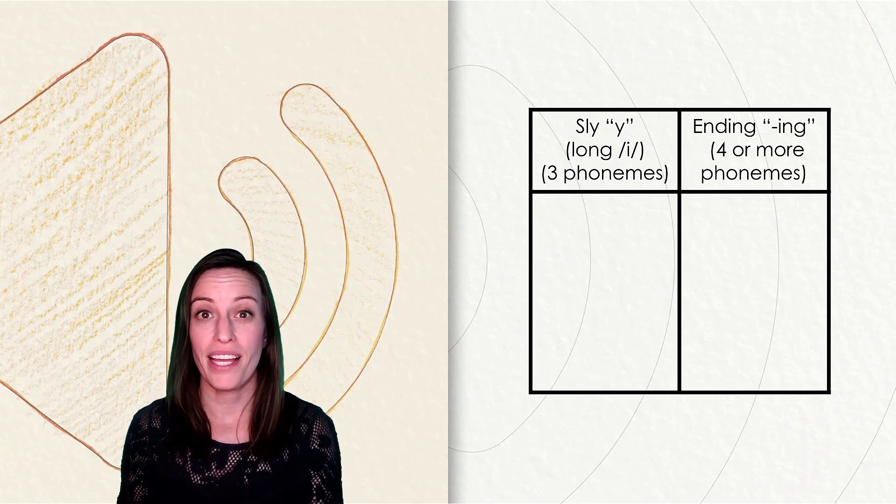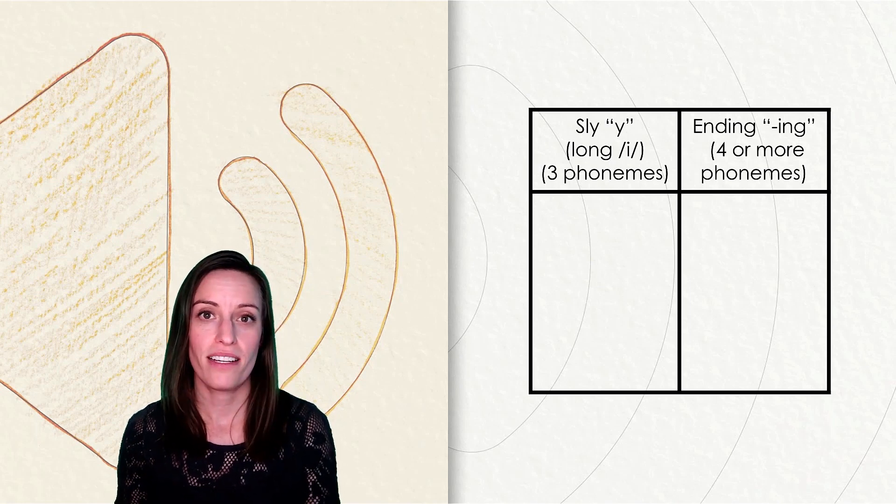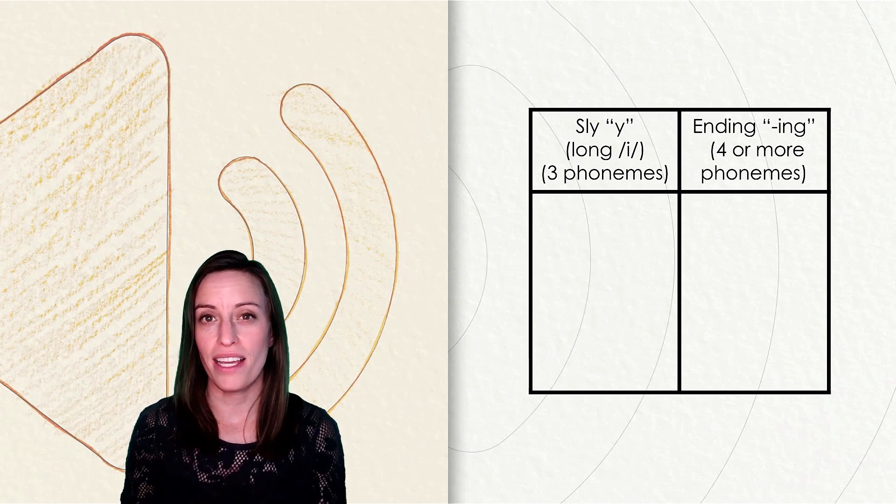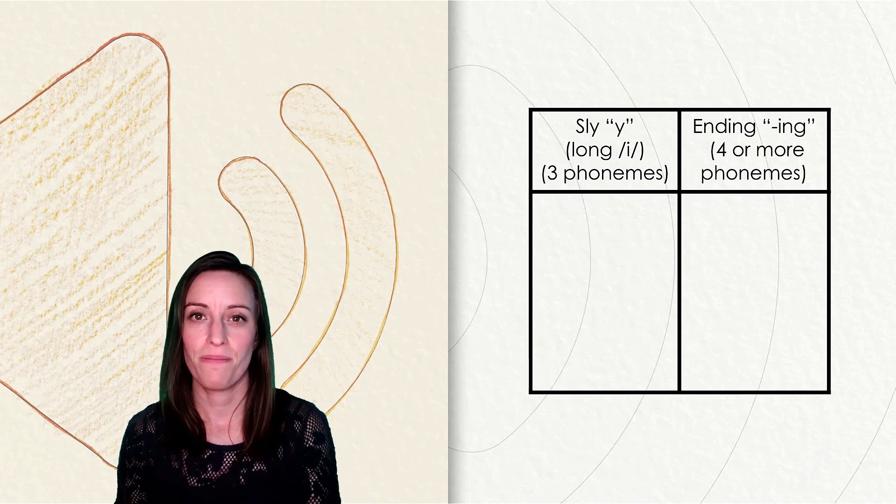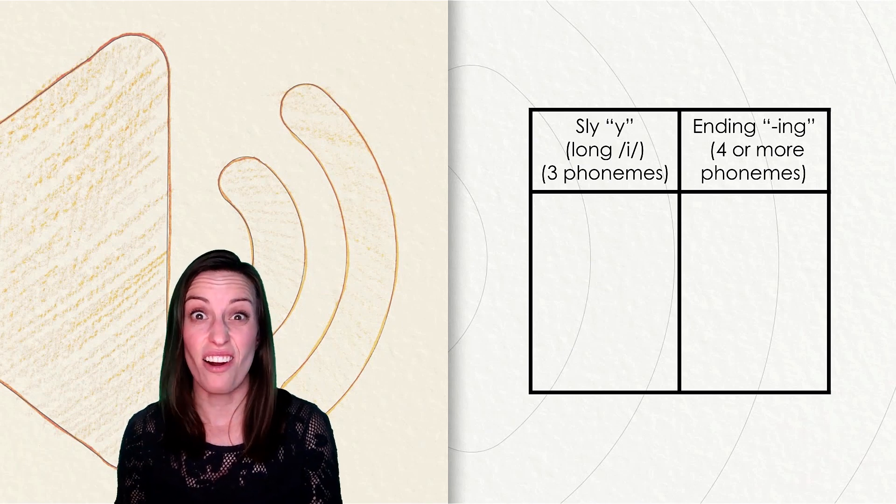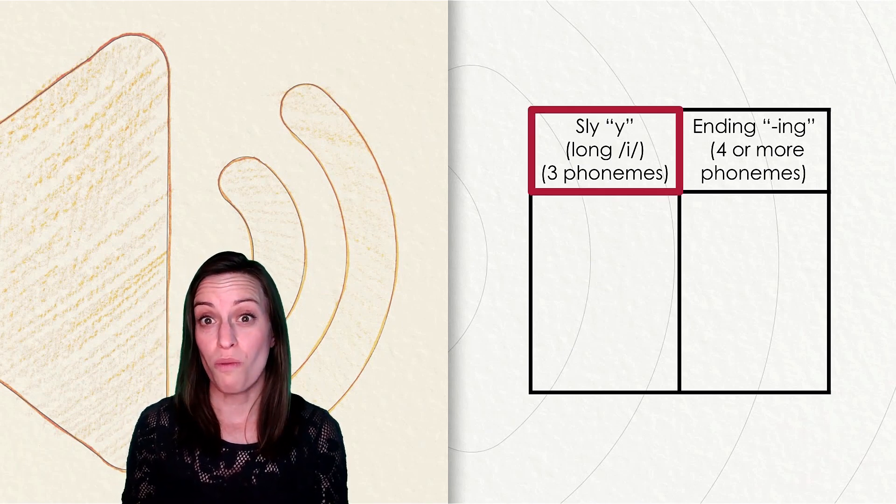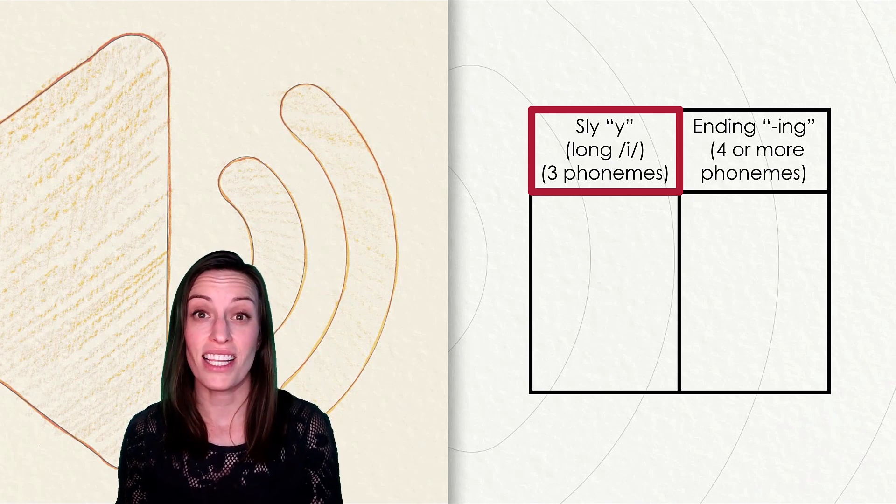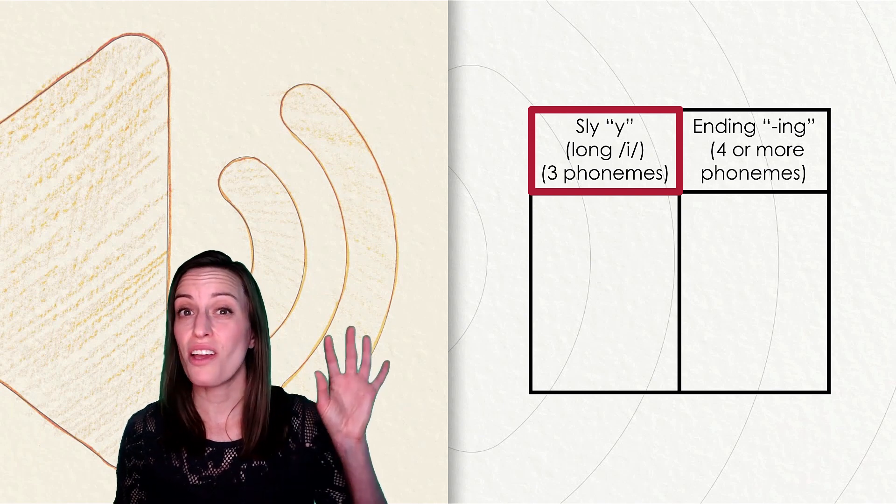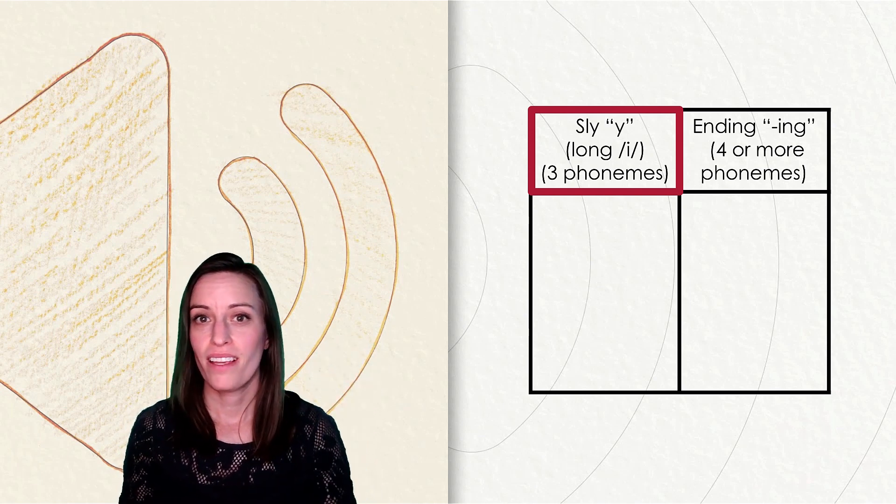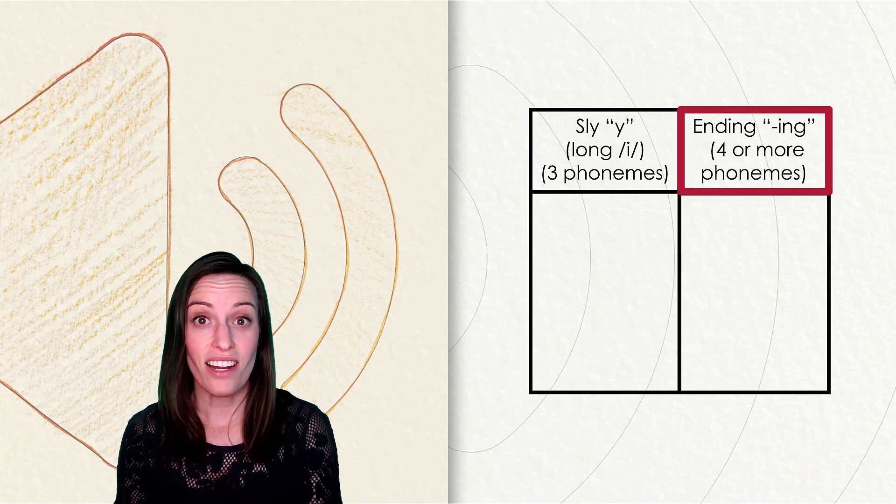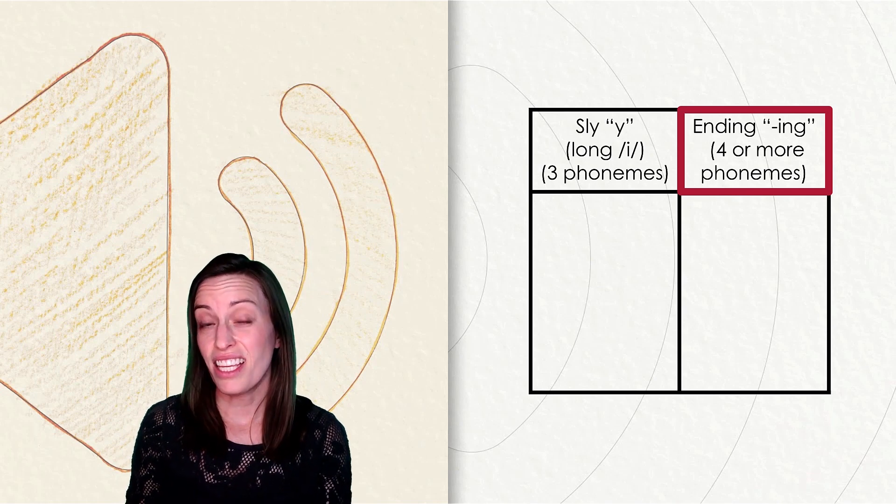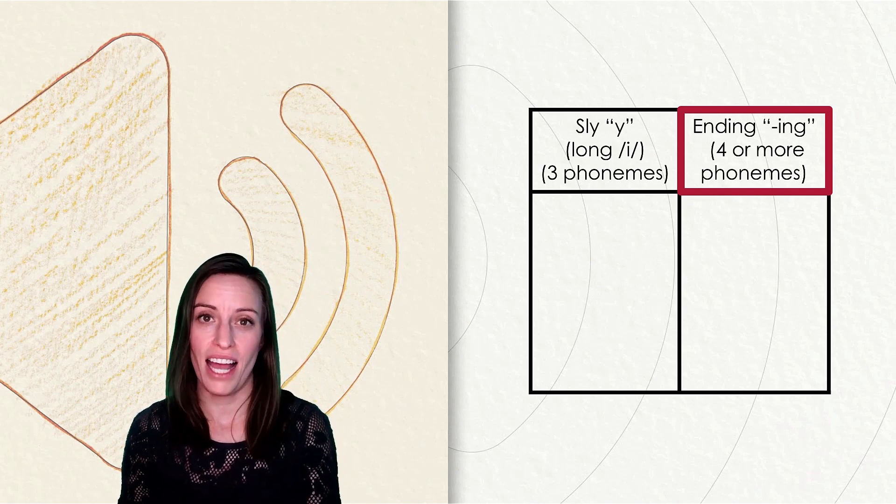Today we are going to play a new game called Sort It Out. I am going to say a word out loud and then you will tell me which column it belongs in. Let's look at our two columns. The first one is for words with the sly y where the y says the long i sound but there's just three sounds. The second column is with words that have the ending ing. These words have four or more sounds.